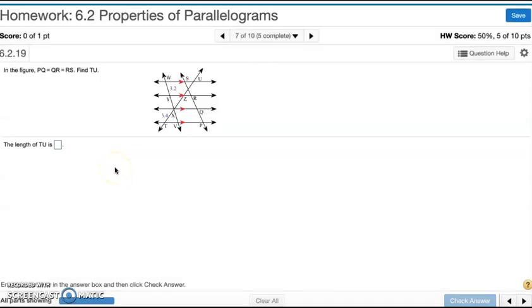Number seven. In the figure, PQ is equal to QR, which is equal to RS. So PQ, QR, and RS are all equal. So using that logic, TX, XZ, and ZU are all equal to each other. So 3.4, 3.4, and 3.4.